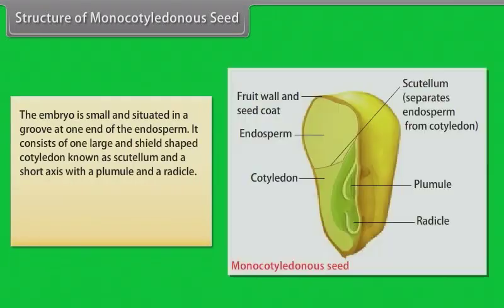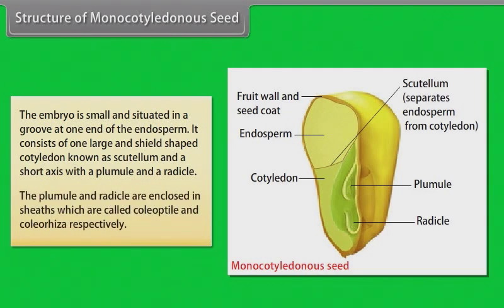The embryo is small and situated in a groove at one end of the endosperm. It consists of one large and shield-shaped cotyledon known as the scutellum, and a short axis with a plumule and a radicle. The plumule and radicle are enclosed in sheaths which are called coleoptile and coleorhiza respectively.